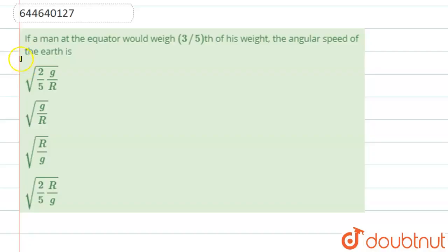Hello students, now we are going to see this question. The question says that if a man at equator would weigh three by fifth of its weight, the angular speed of the earth is.